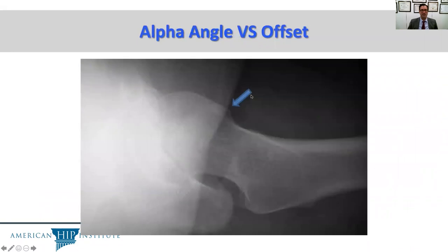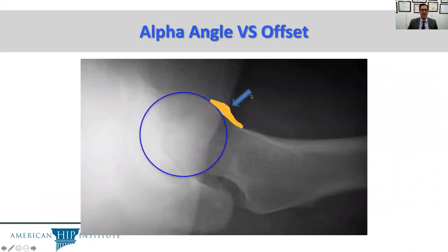The alpha angle versus offset measurements are shown here. This is the alpha angle measurement, and the offset is measured here.